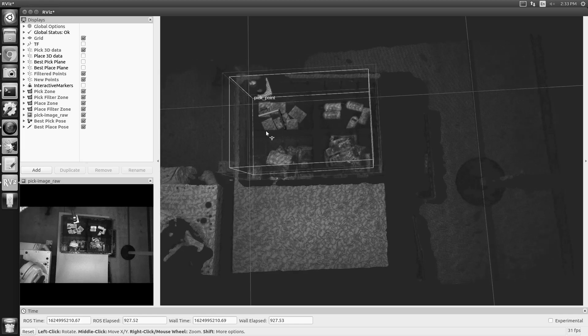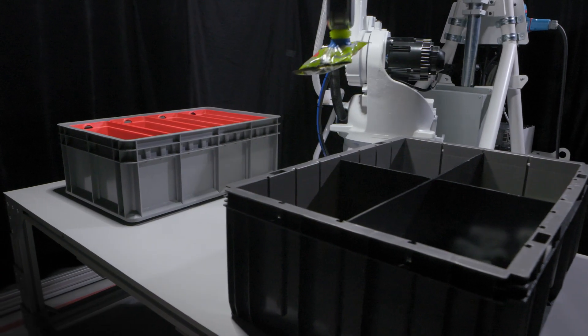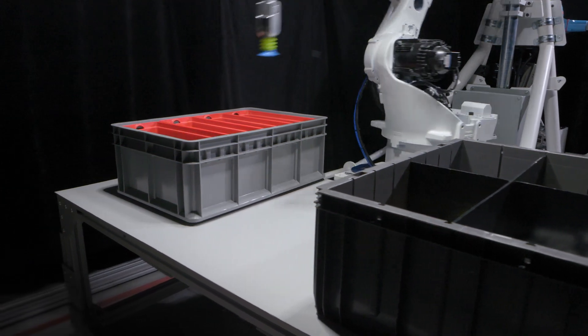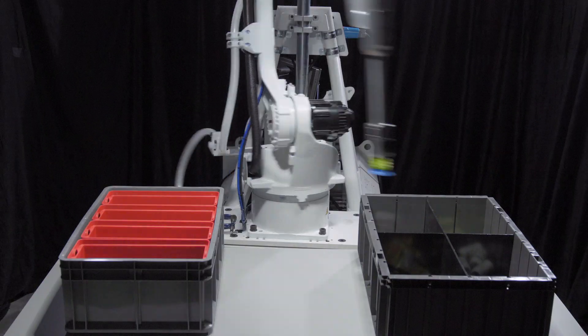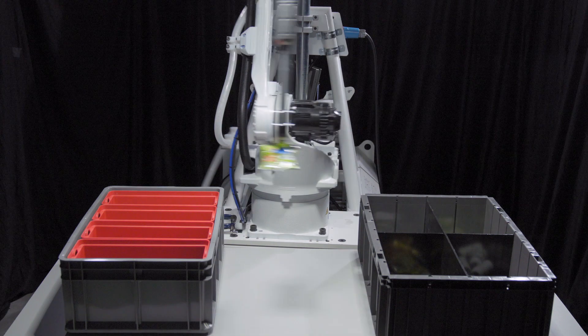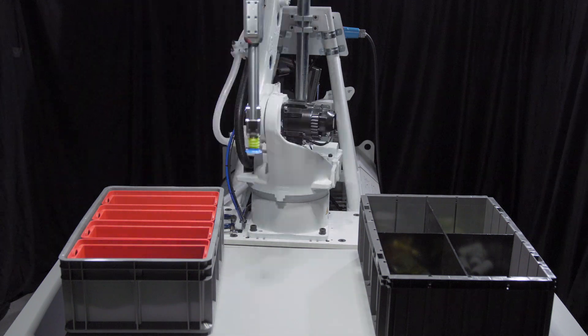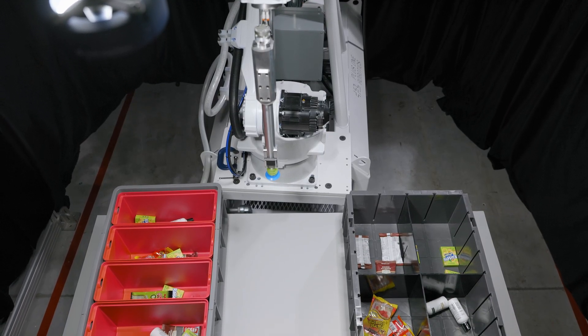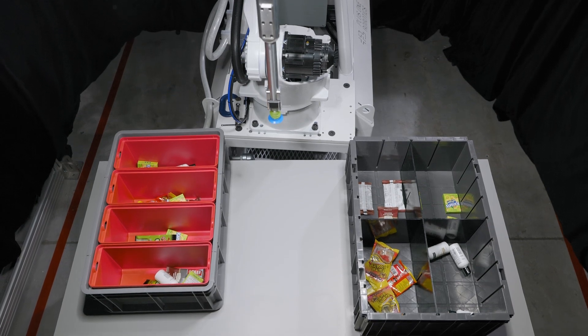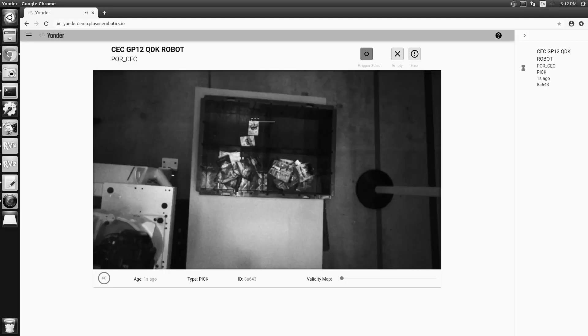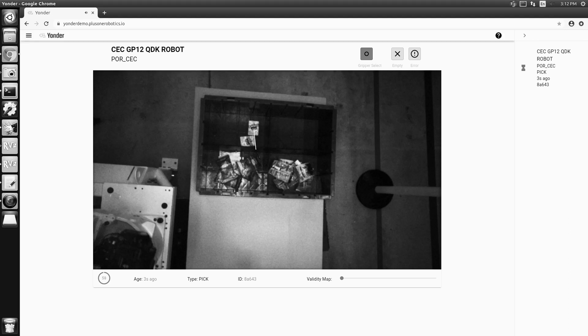It assigns each one an associated confidence level. If no items on scene have a qualified confidence level, Pick One generates a Yonder request for a crew chief to handle the exception by selecting an item to be picked.